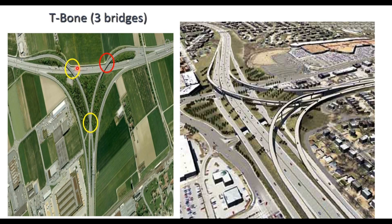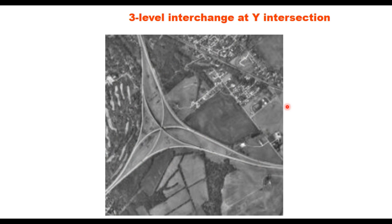In the T-bond, two right turns cross at the bridge structure at different levels — a quite expensive arrangement. A three-level interchange at a Y-intersection is also a three-level structure where the crossing of different movements occurs at different levels but vertically at the same point.